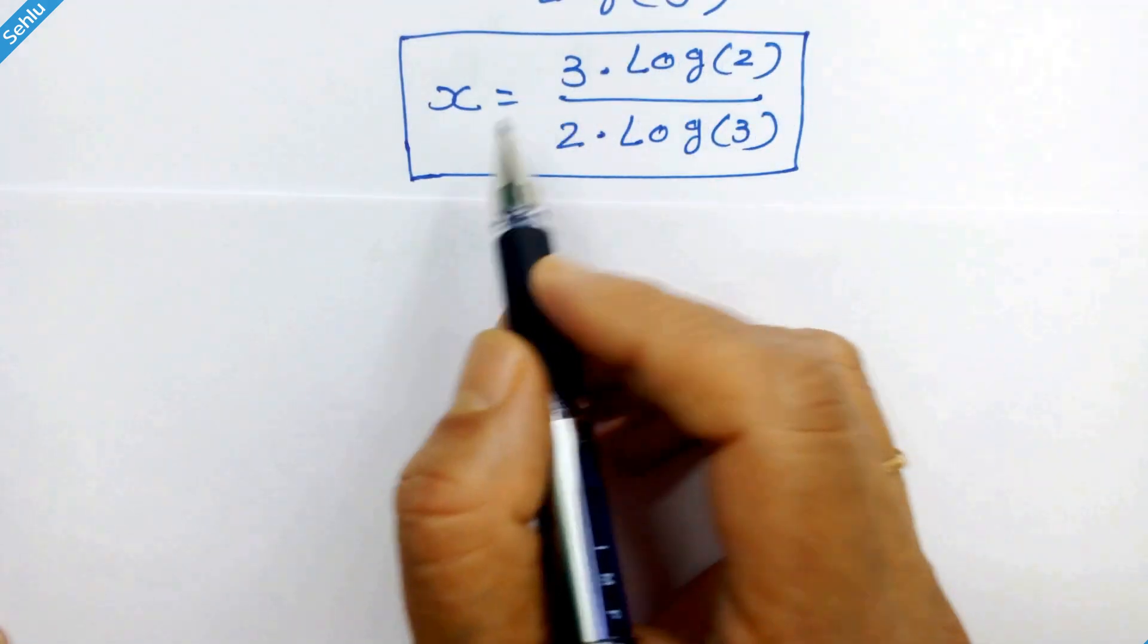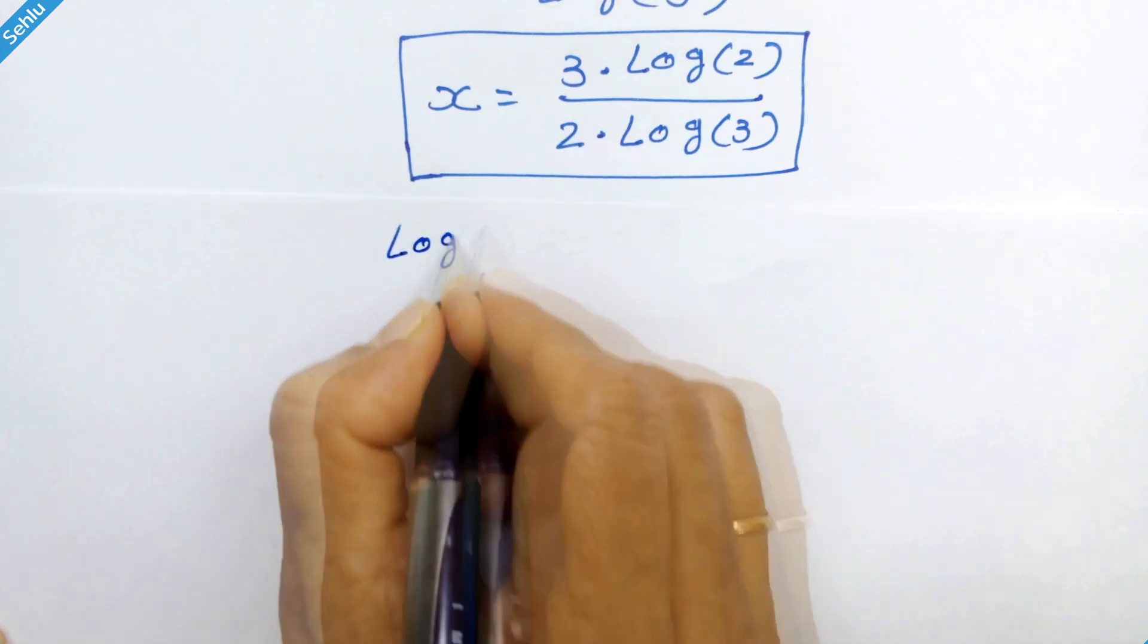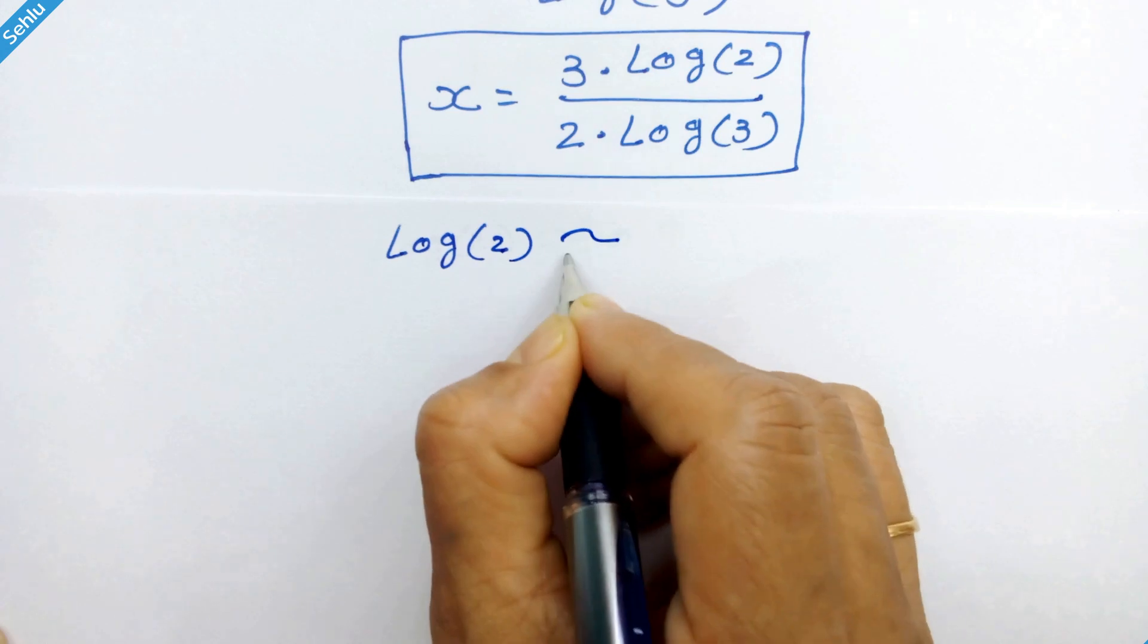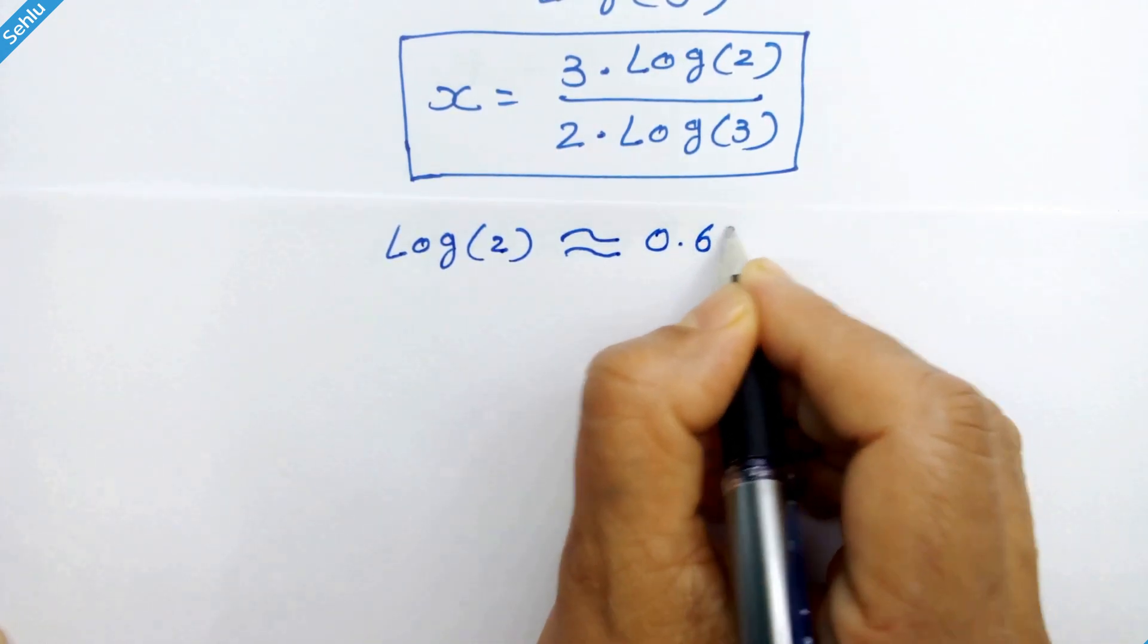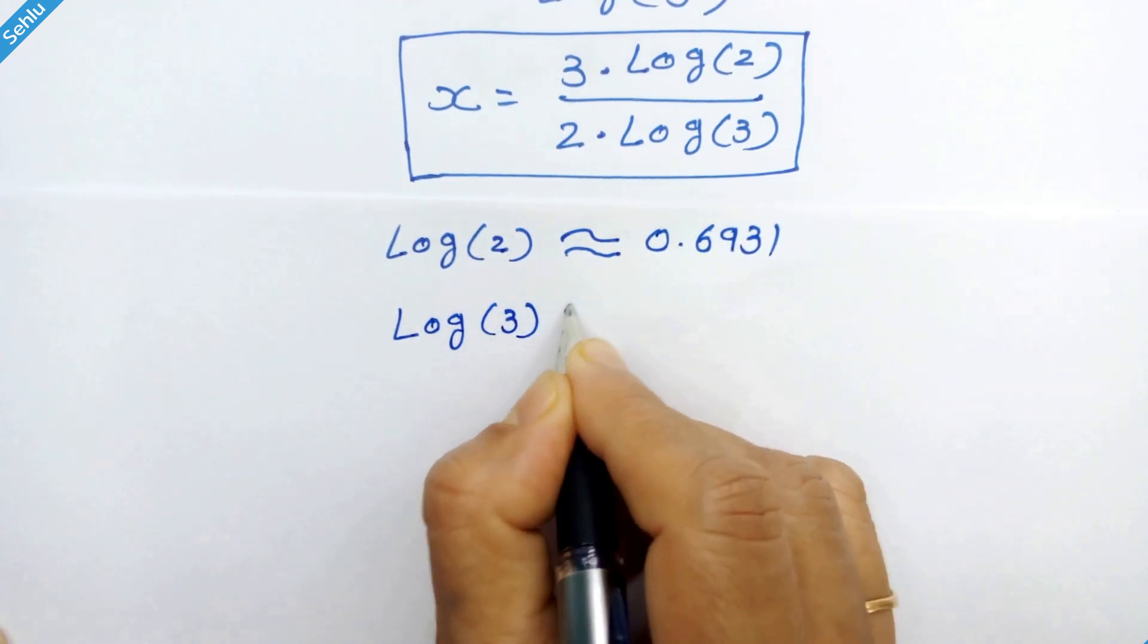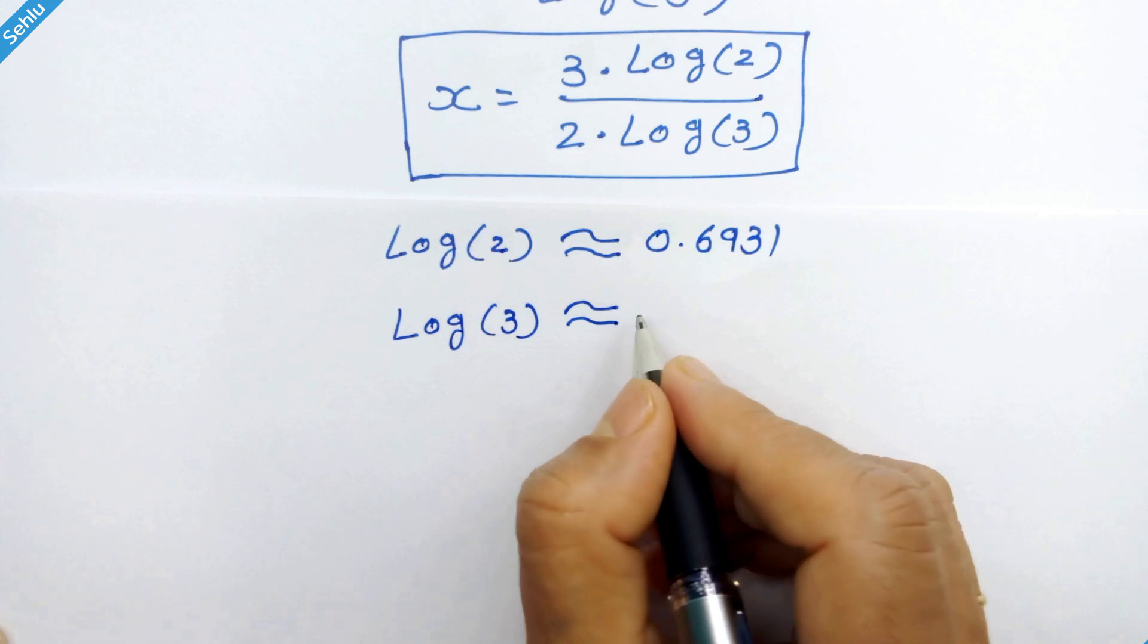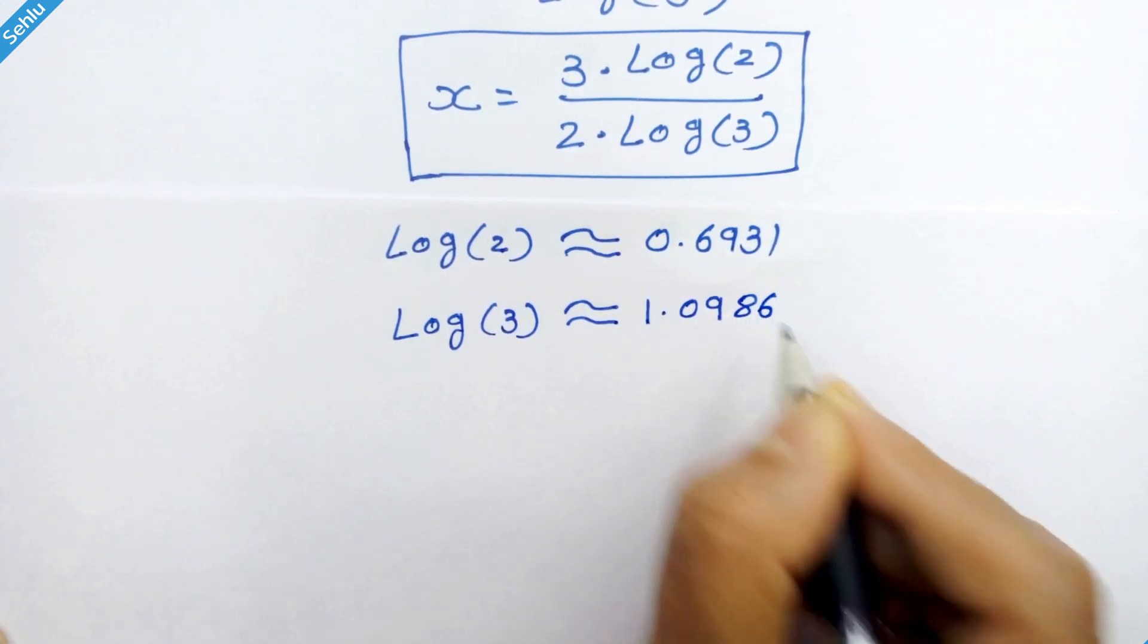Now the decimal approximations: log of 2 is approximately 0.6931 and log of 3 is approximately 1.0986.